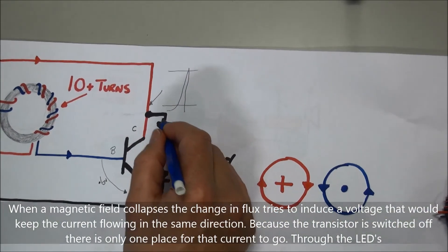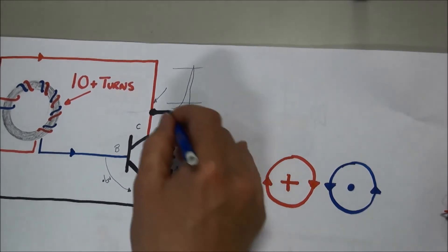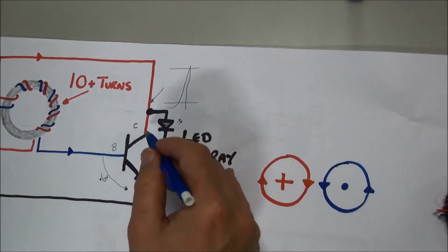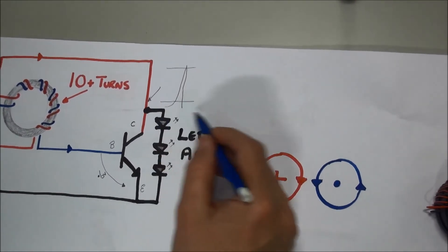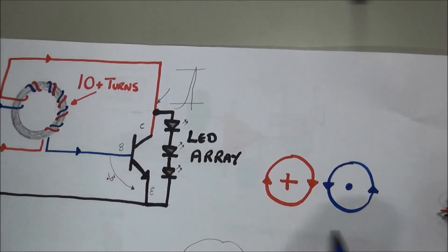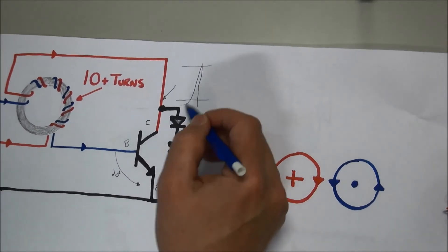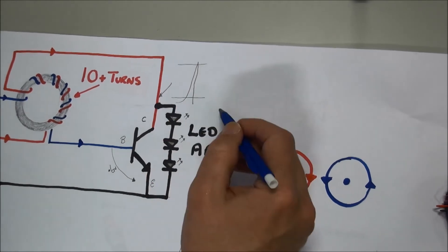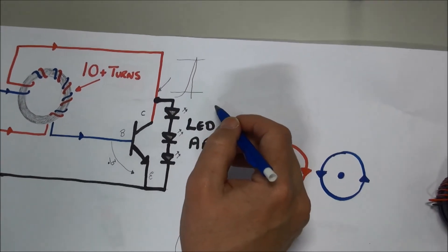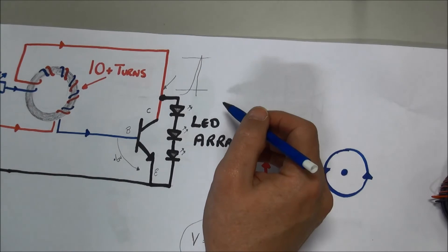In my array I've got 20 of those, 20 series of three LEDs all going this way. The voltage spike can be used to switch them on, and because it's switching on and off so rapidly, we can't detect it actually being switched on and off.